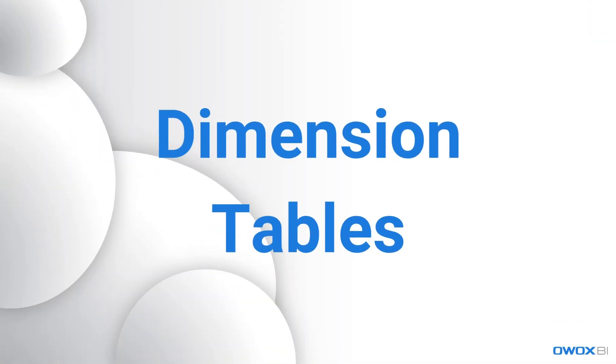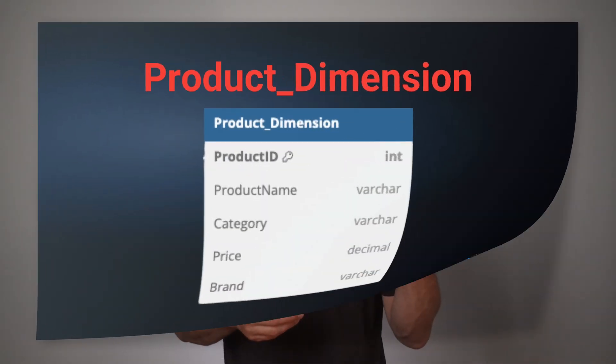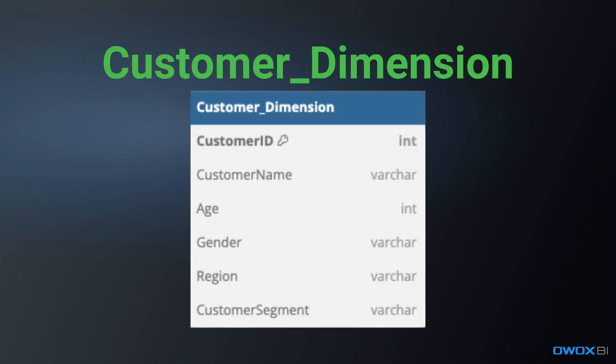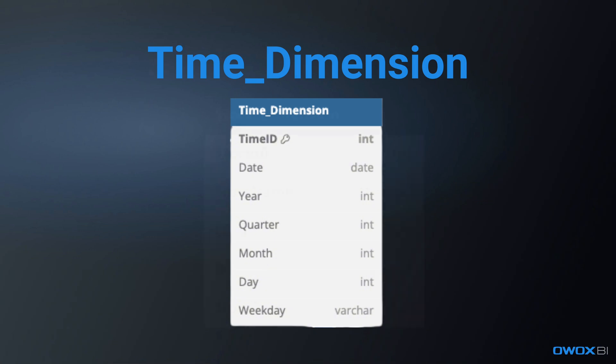Next up, dimension tables. While the fact table tells you what happened, dimension tables tell you the who, what, where, and when. They hold descriptive data that adds context to your metrics — that's why they're called dimensions. For example, the product dimension might include category, brand, and supplier. The customer dimension includes region, age group, and segment. The time dimension covers dates — month, quarter, and year. The store dimension shows location and store type. These dimensions are your filters, slicers, and drill-down paths in your BI dashboard. Each dimension has a primary key which links back to the fact table's foreign key — that's how everything stays connected.